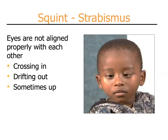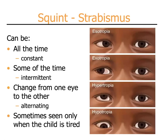We have mentioned squint before. The other term for squint is strabismus, which means the eyes are not properly aligned with each other. They can be crossing in, they can be drifting out, or they can be misaligned up and down. Squint or strabismus can be constant, it can be intermittent, it can appear in one eye and then the other — or alternating — and sometimes it is only seen when the child is tired.